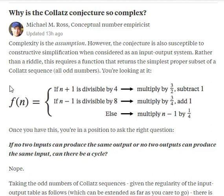And this function represents how this works. We have an input n, an odd one, and if n+1 is divisible by 4, we multiply by 1.5 and subtract 1. We always end with an odd number. The second case is if n minus 1 is divisible by 8, multiply by 0.75 and add 1. Else, the condition that captures all of the cases is multiply n minus 1 by 0.25.